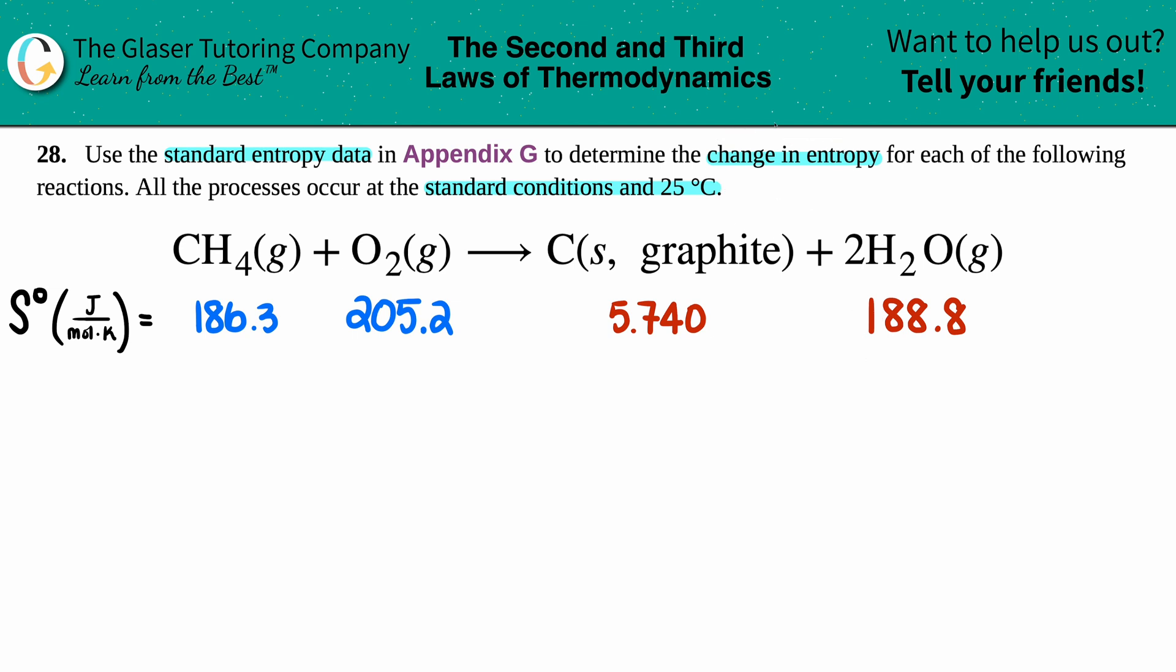Now we want to find that change in entropy. Change in entropy, the change is always a delta value, the triangle, and entropy is always an S. Now since we're using standard values, this would be delta S notch. The notch always means that you're going in the back of the textbook to find those standard values. And that's what I did here.